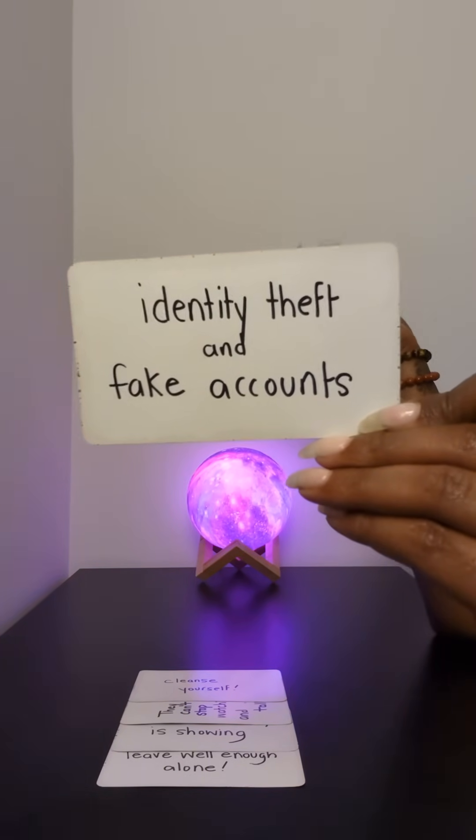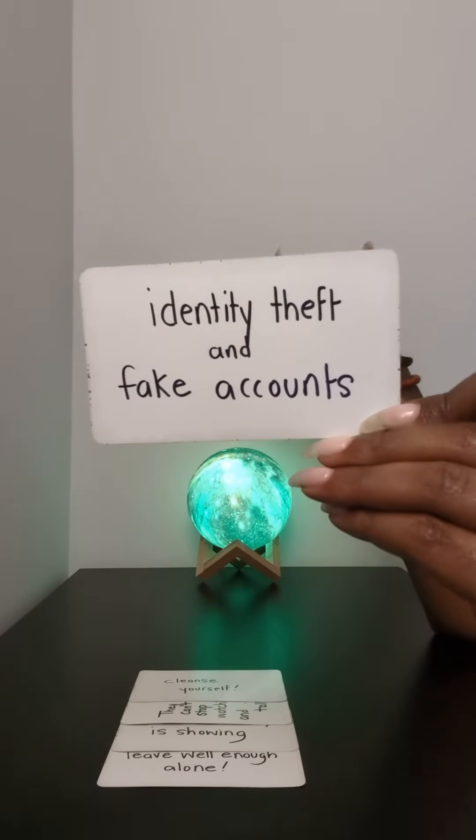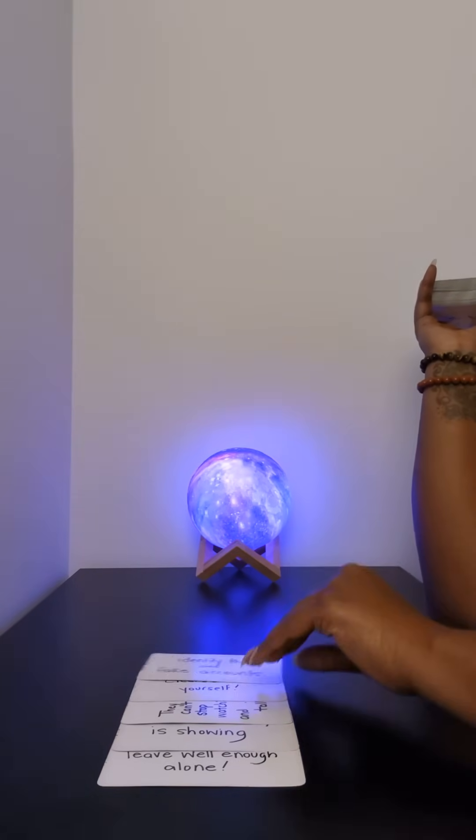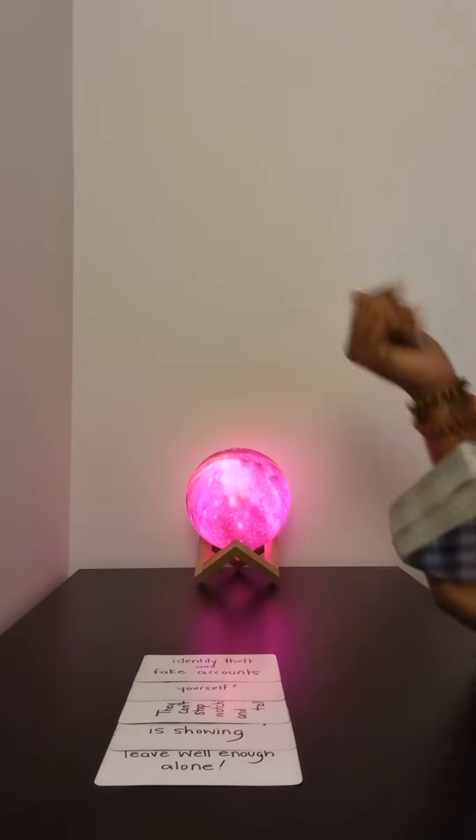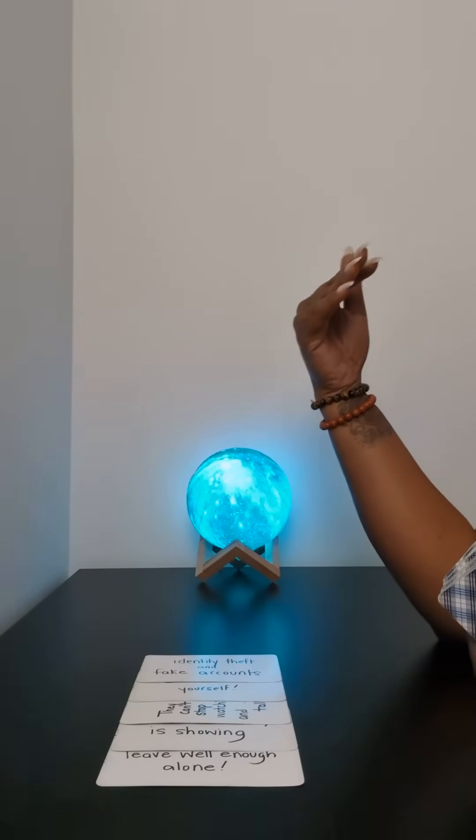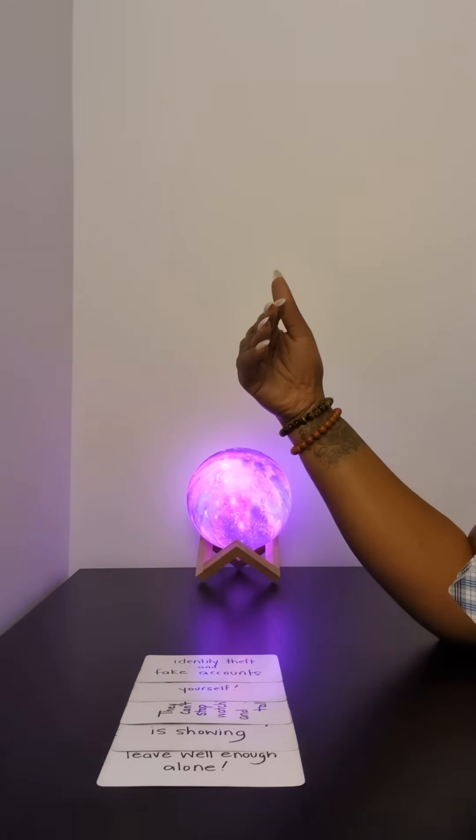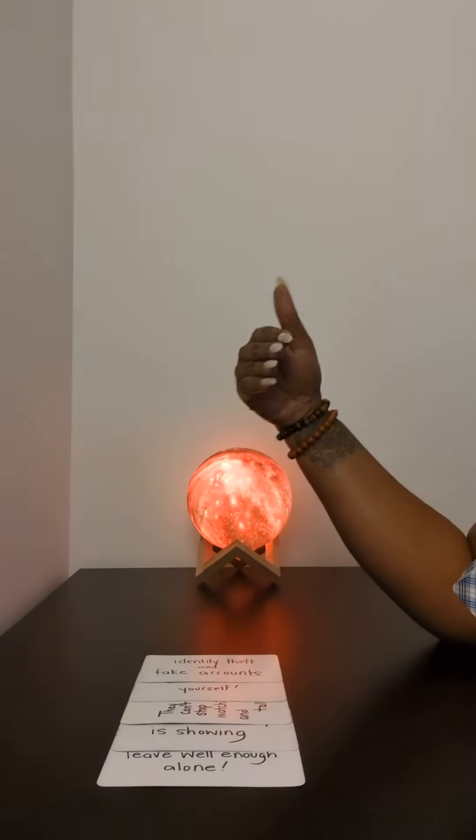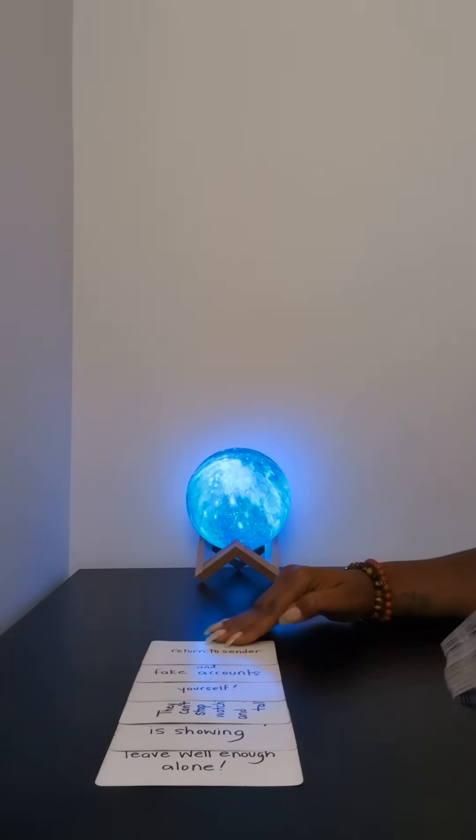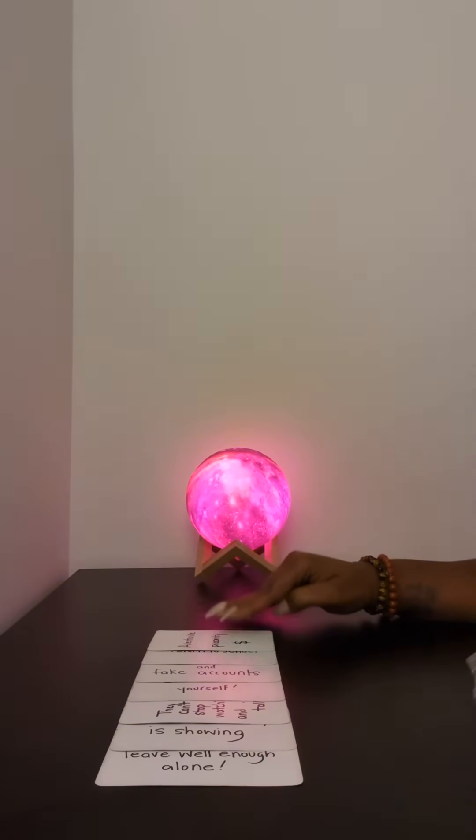This person has hacked into your email account somehow. This person has created fake accounts in your name, stolen your pictures, and created fake accounts. Whether it's on social media or other platforms, in your name, child, they done did it all. When I tell you they done it all, they've done it all. And look, it all get returned right back to them.